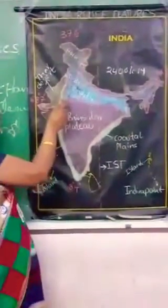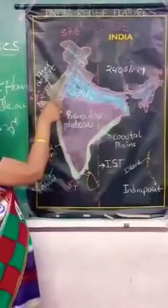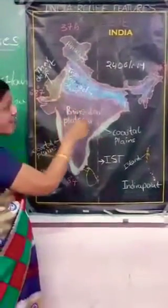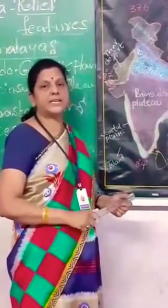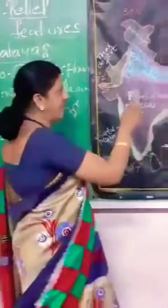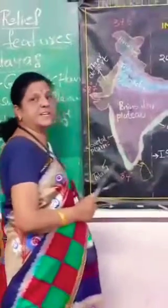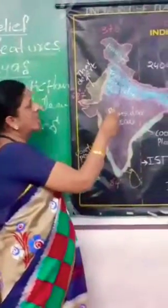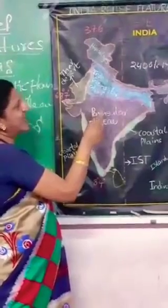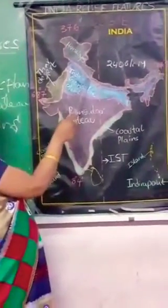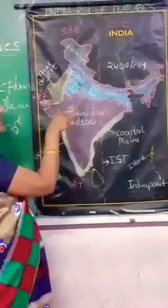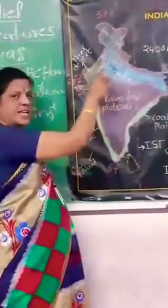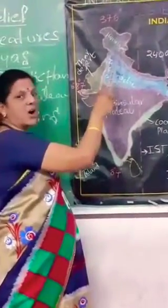The next range is Himachal, also called the Lesser Himalayas, located to the south of Himadri. It is very famous for different types of ranges such as the Mahabharata range and the Pir Panjal range. It is also famous for hill stations like Shimla, Mussoorie, Nainital, and Ooty. It has famous valleys such as the Kashmir Valley, Kullu Valley, and Kangra Valley.